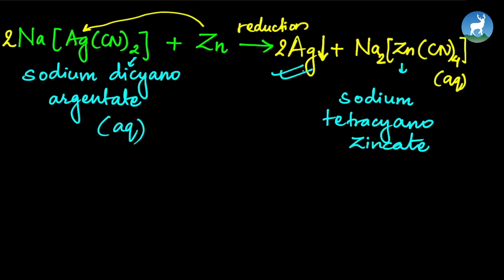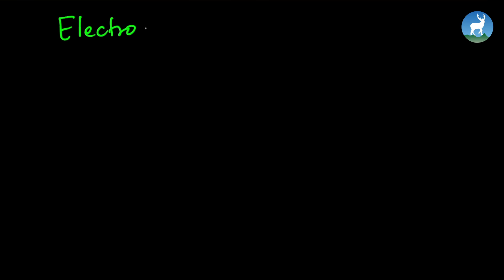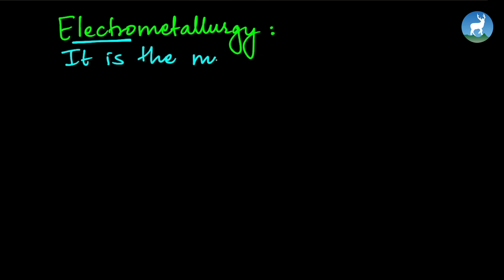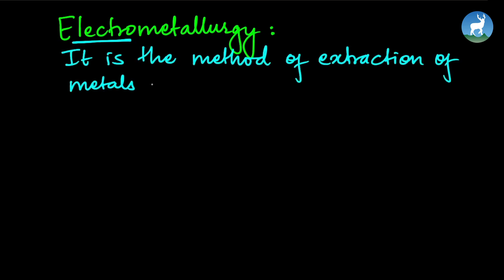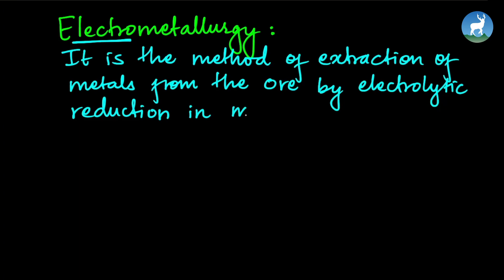This is hydrometallurgy: a reagent dissolves the ore into a soluble complex, then a more electropositive metal causes reduction and precipitation of the target metal. The next method is electrometallurgy, which uses electricity for extraction by electrolytic reduction.